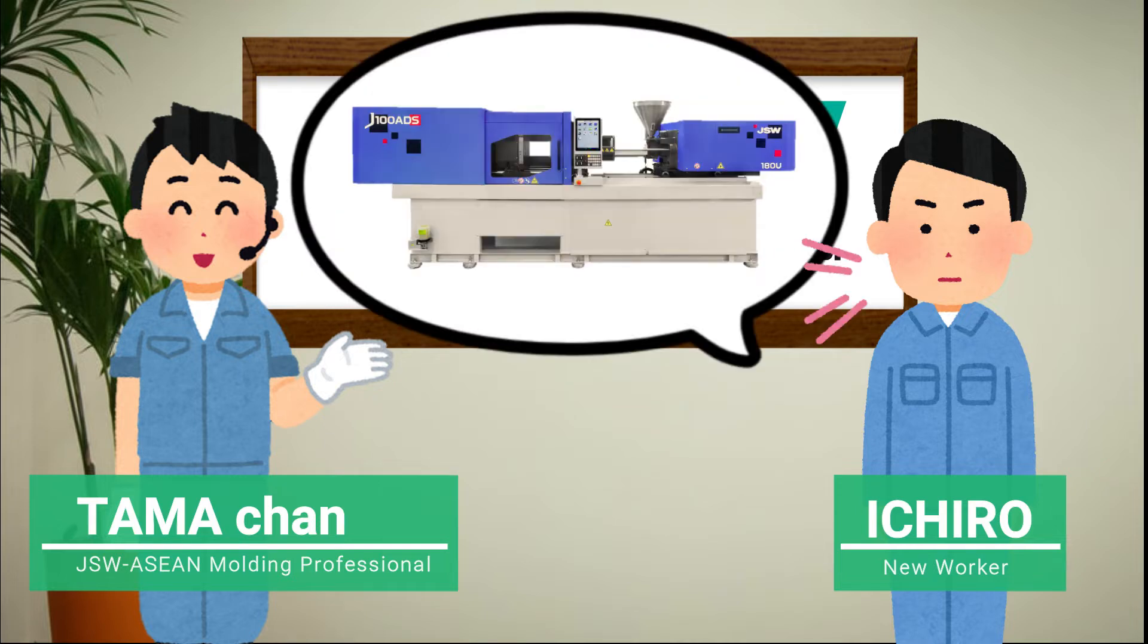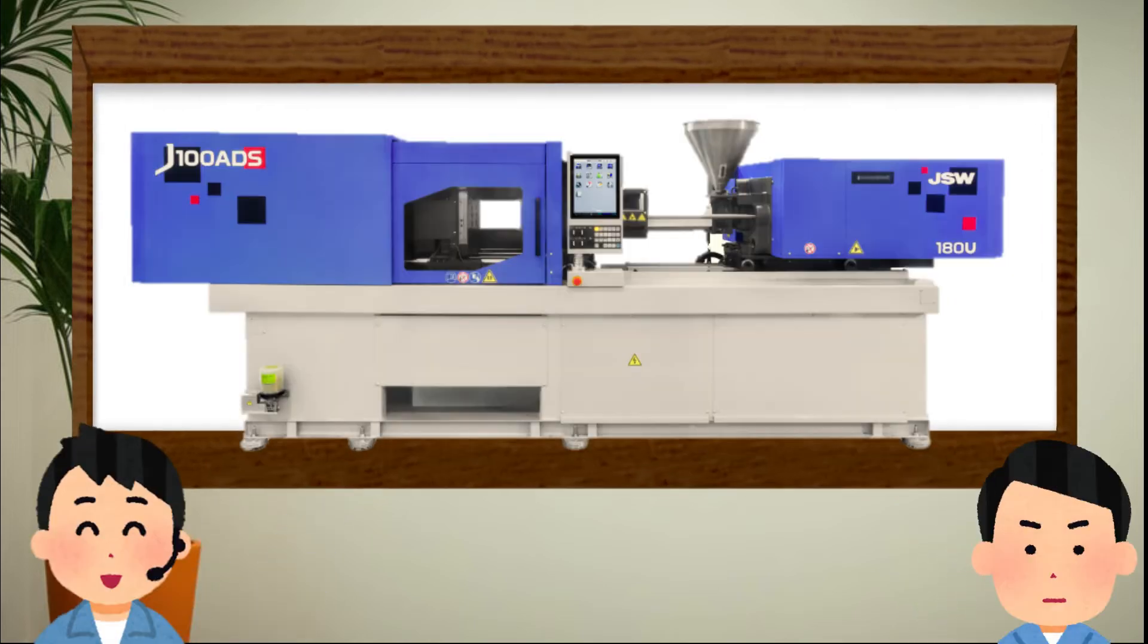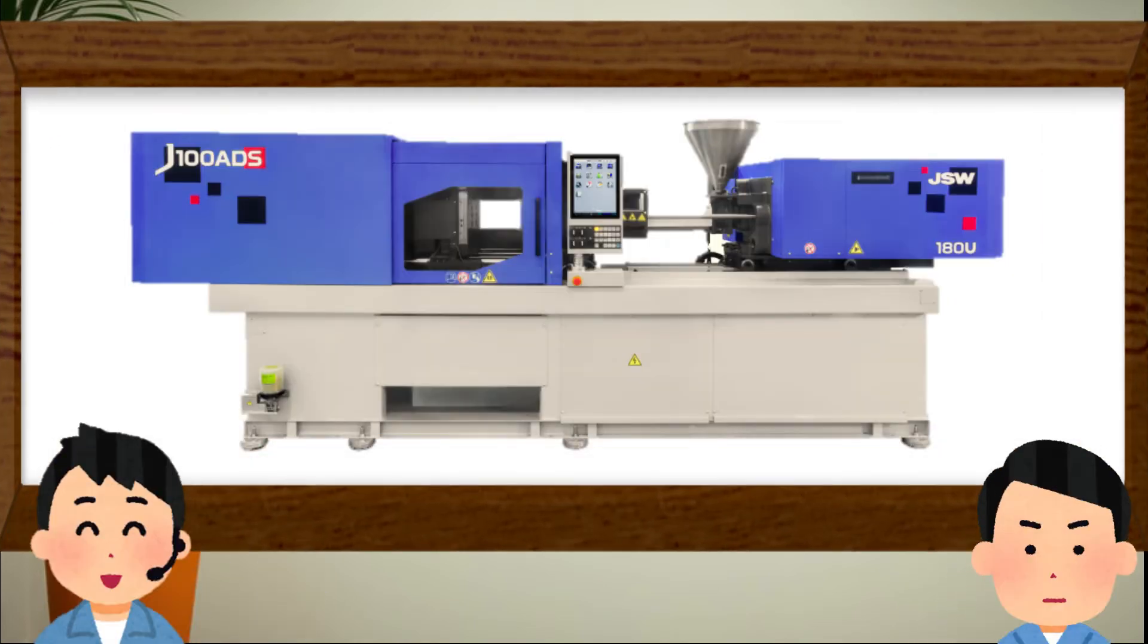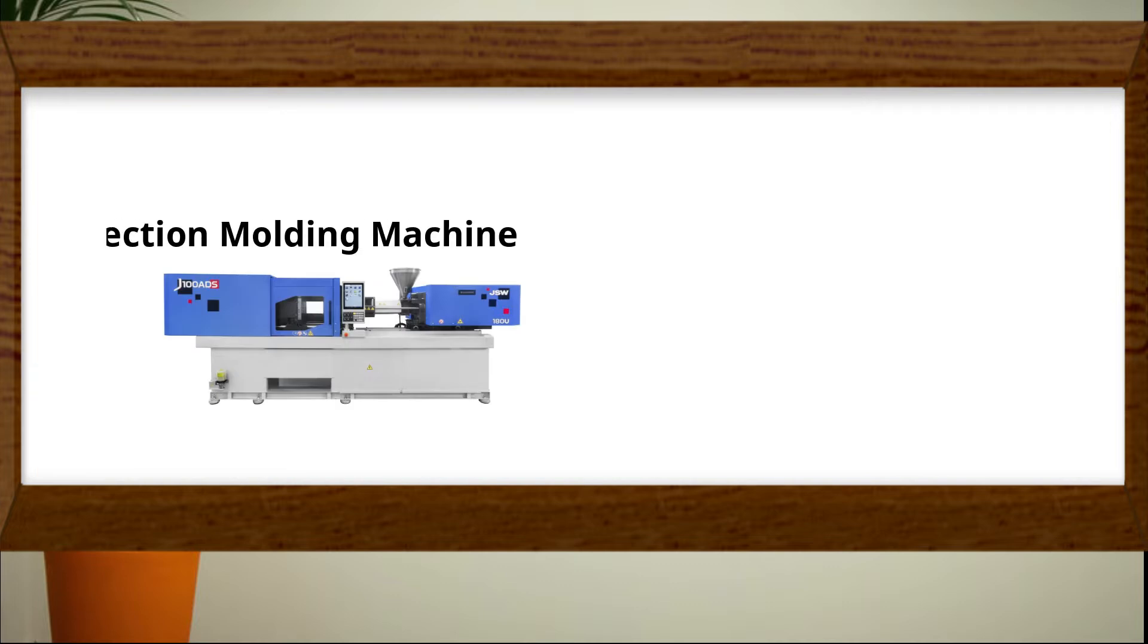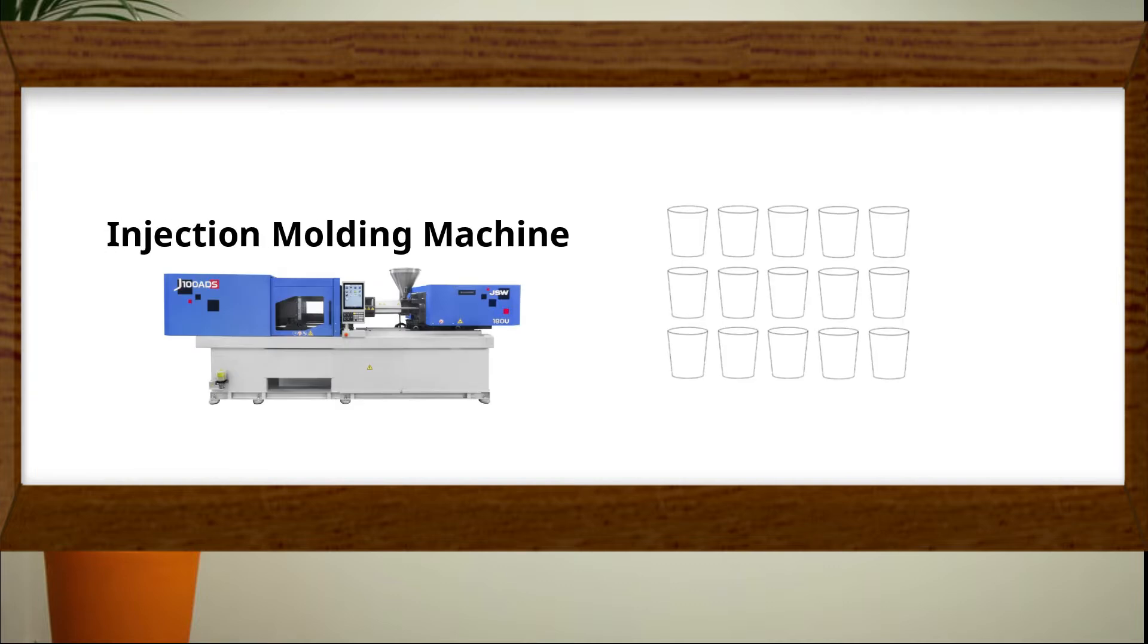Tama-Chan, could you tell me about injection molding machine? Okay. Injection molding machine is a machine which makes plastic products. One of the biggest features of injection molding machine is making many same shape products in short time.